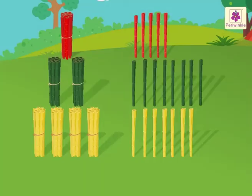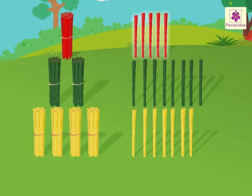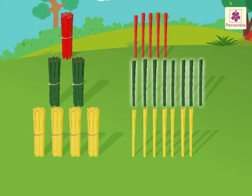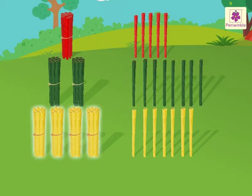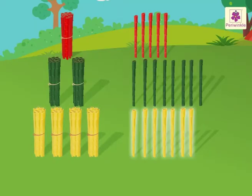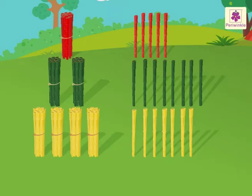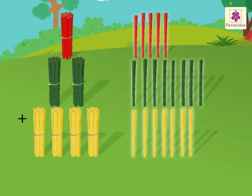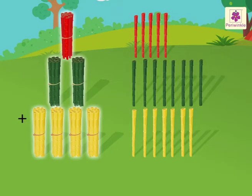So there are one ten and five ones red bamboo sticks, two tens and eight ones green bamboo sticks, and four tens and seven ones yellow bamboo sticks. Now, as we know, we first have to add the ones and then the tens.